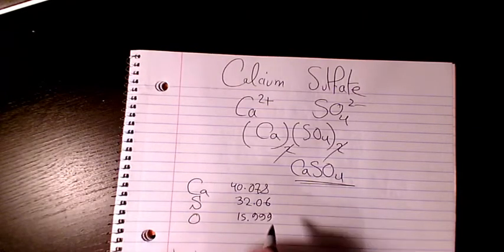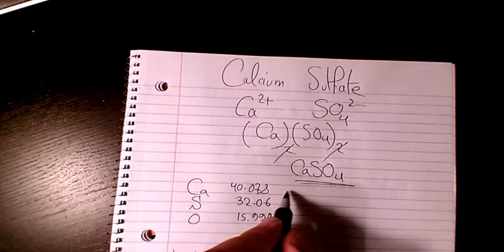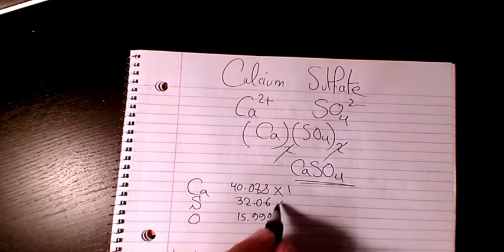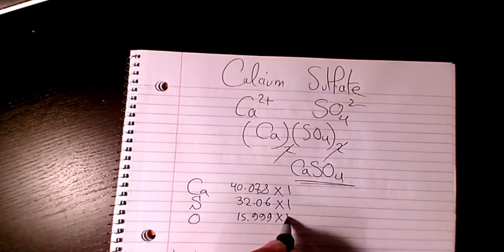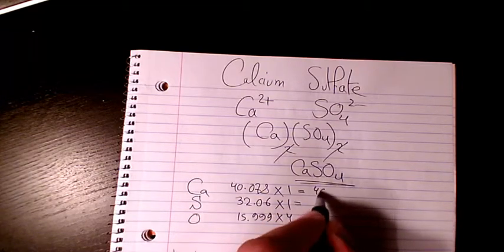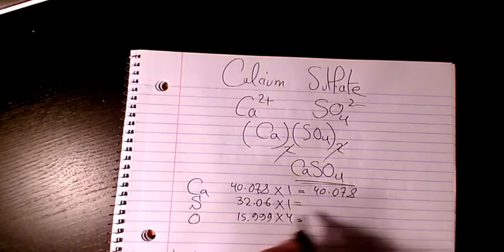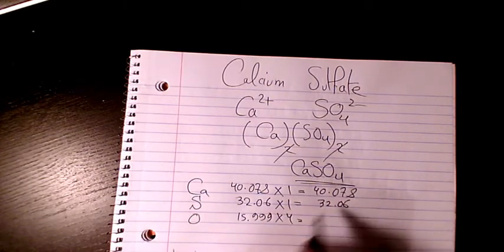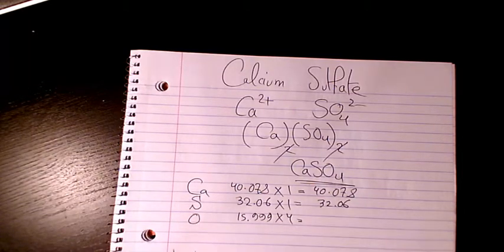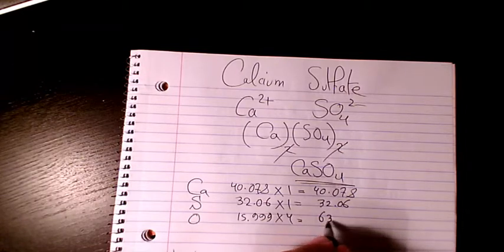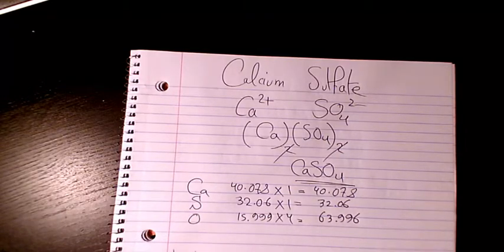So how many atoms of each element do we have? We have just one calcium, one sulfur, and oxygen is four. That makes it 40.078 plus 32.06, and here we have 15.999 times four, that makes it 63.996.